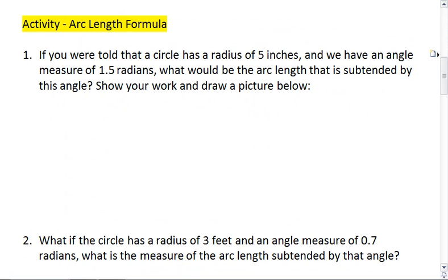So I want you to think about this for a moment. If you were told the circle has a radius of 5 inches and we have an angle measure of 1.5 radians, what would be the arc length that is subtended by this angle?